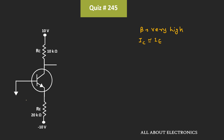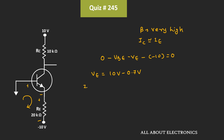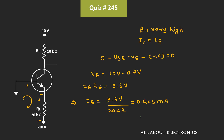Let's apply the KVL equation in this loop. If we apply KVL, then we can write: 0V − VBE − VE − 10V is equal to 0. Here, we have been given that the value of VBE is equal to 0.7V. That means this emitter voltage VE is equal to 10V − 0.7V. And this emitter voltage is equal to IE times RE. So IE times RE is equal to 9.3V, or we can say the emitter current is equal to 9.3V divided by 20 kΩ, that is equal to 0.465 mA. So roughly, we can say that the collector current Ic is equal to 0.465 mA.